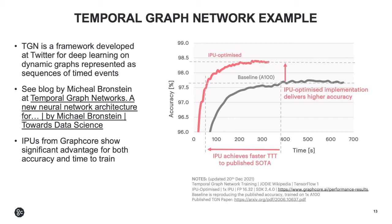For graph neural networks, we have an example with a temporal graph network, or TGN. This is a framework for deep learning on dynamic graphs represented as sequences of timed events. This was developed at Twitter — for a full description, please see the blog written by Michael Bronstein with the link shown on the slide. The IPU is very well suited to this kind of graph-based processing, and we continue to see strong results versus GPUs across a range of GNN model types. In this case, the IPU showed significant advantages for both time to accuracy as well as accuracy itself. These examples for transformers and GNNs continue to be proven out in customer case studies.